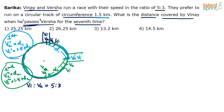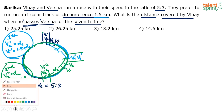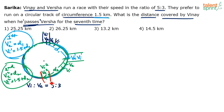This new meeting point becomes the third instance and the new starting point. Again, Vinay makes one full circle — 1.5 km — while Varsha covers d3. Then Vinay covers that d3 to meet Varsha. This pattern continues for all seven crossings.